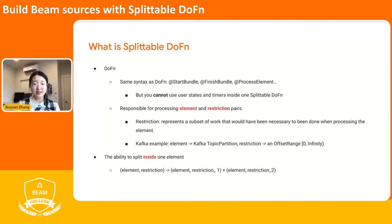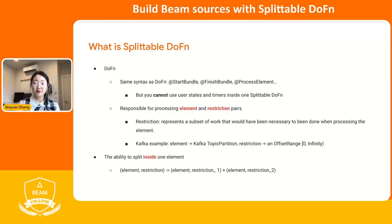One point is that you cannot use user timers and user states in your Splittable DoFn. It may not be hard to support in Splittable DoFn, but we decided not to do so. But in the future, if we get many feature requests on that, we will definitely support it. Since it's a DoFn, it always has an input and an output. For Splittable DoFn, you provide an element, and during the execution time, we will pair the element with the restriction. So the actual process element function will get an element and restriction pair.